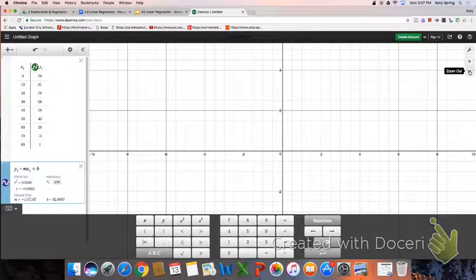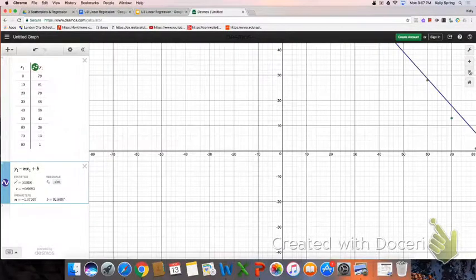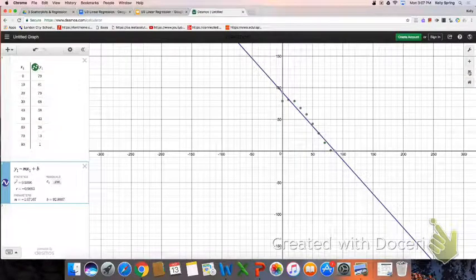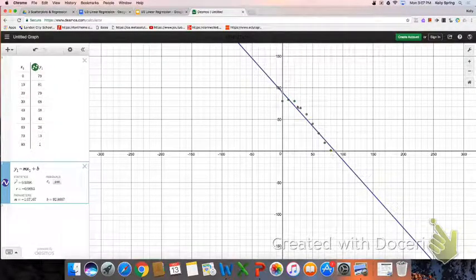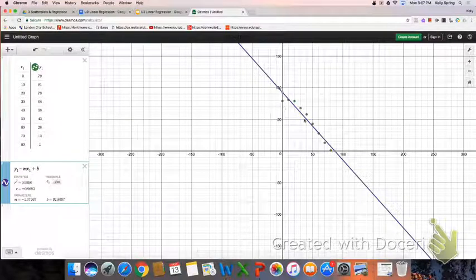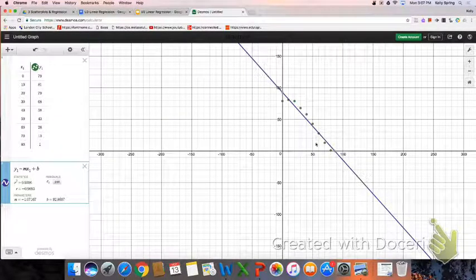And if I zoom out a little bit or a lot, you can see those points, the green points that I plotted here on my table. And this blue line is my line of best fit.